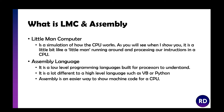Assembly language is a low-level programming language which is built for processors to understand. It's a lot different to a high-level language such as VB or Python, and it's an easier way to demonstrate machine code in a CPU. Assembly language is hardware specific, so depending on your CPU it'll have a different assembly language. That's why we program in a high-level language — if you had to write a different program for every single CPU that existed, that would take forever. With a high-level language such as VB or Python, we write the code once and it gets compiled and converted into assembly or machine code.